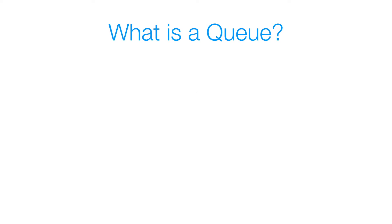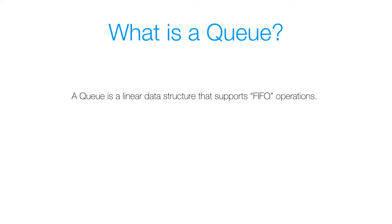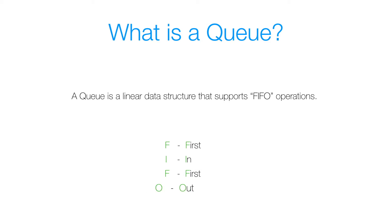So what is a queue? A queue is simply a linear data structure that supports FIFO operations. Linear means that you can add items and remove items sequentially from the queue. FIFO stands for First In First Out, and all that means is that the first item that you add to the queue is the first item that you remove from the queue. Similarly, the last item that you add to the queue is going to be the last item that you remove from the queue.